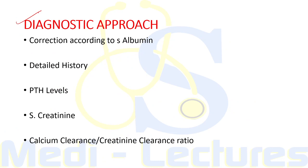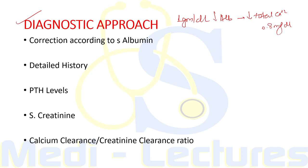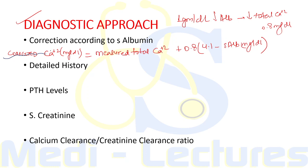The first step in diagnostic evaluation is to ensure the alteration in serum calcium is not due to serum albumin changes. Each 1 g/dL decrease in serum albumin leads to a decrease in total calcium by 0.8 mg/dL without affecting ionized calcium. The corrected calcium formula is: measured total calcium + 0.8 × (4.1 − serum albumin), where 4.1 represents average albumin levels.